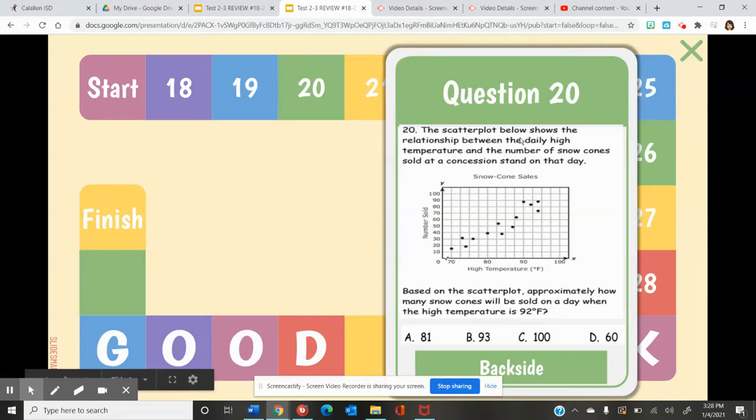Question 20. The scatter plot below shows the relationship between the daily high temperature and the number of snow cones sold at a concession stand on that day. Based on the scatter plot, approximately how many snow cones will be sold in a day when the high temperature is 92 degrees Fahrenheit?